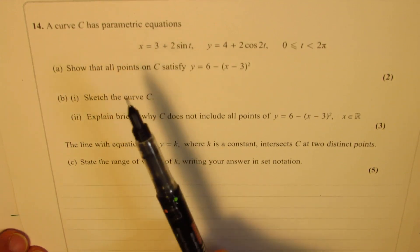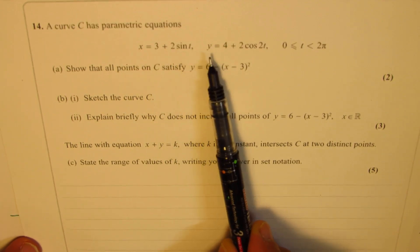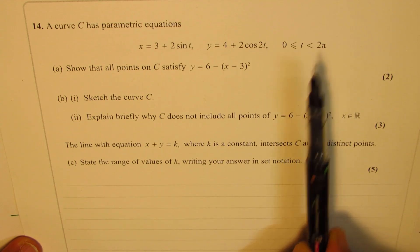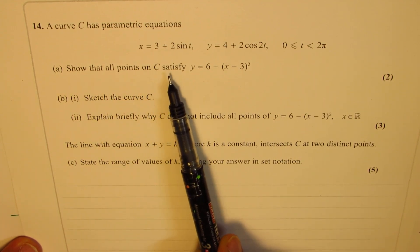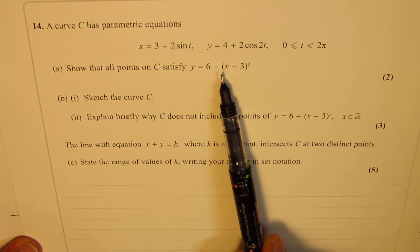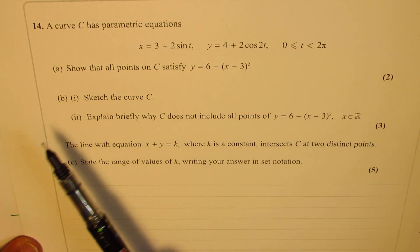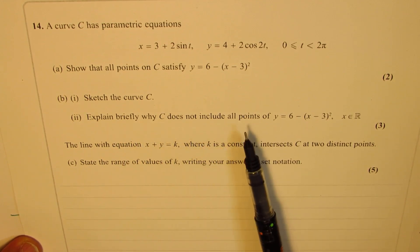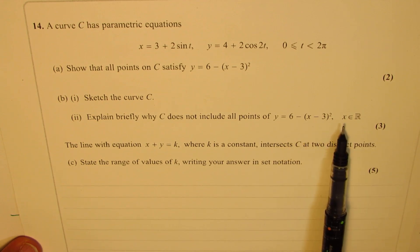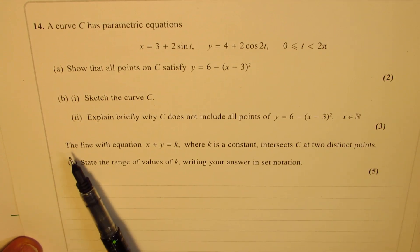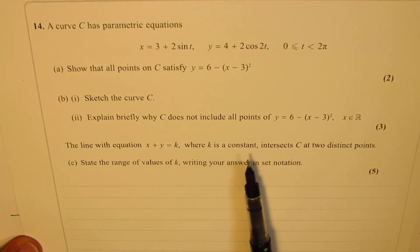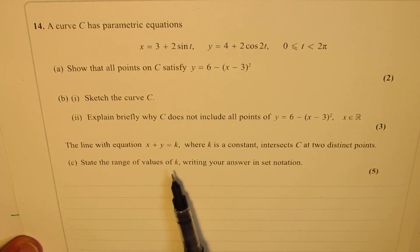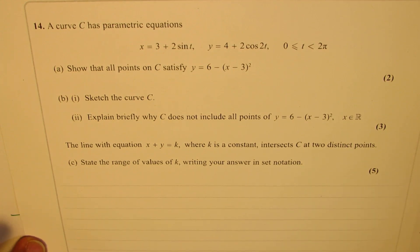A curve C has parametric equations x equals 3 plus 2 sin t, y equals 4 plus 2 cos t, where t is greater than or equal to 0 and less than 2 pi. Part A: Show that all points on C satisfy y equals 6 minus (x minus 3) squared — that's two marks. Part B: Sketch the curve C and explain briefly why C does not include all points of this curve where x belongs to real numbers. Part C: The line with equation x plus y equals k, where k is a constant, intersects C at two distinct points — state the range of values of k in set notation. That's a very beautiful question.